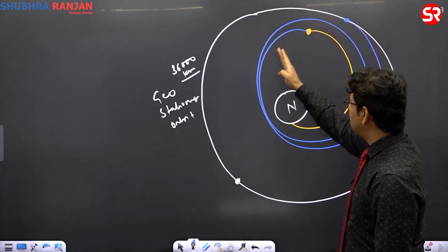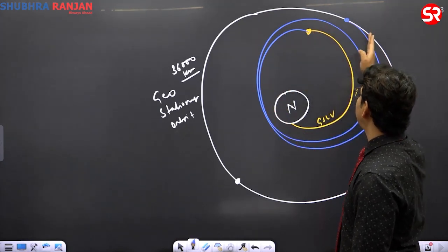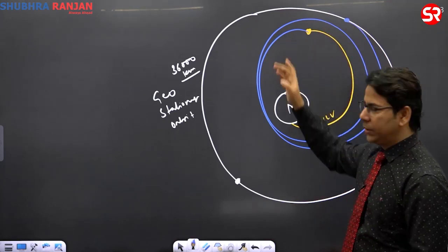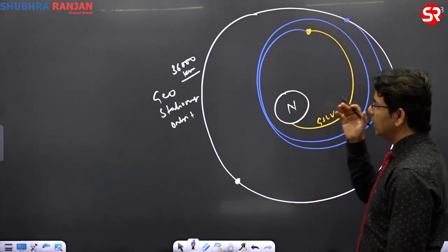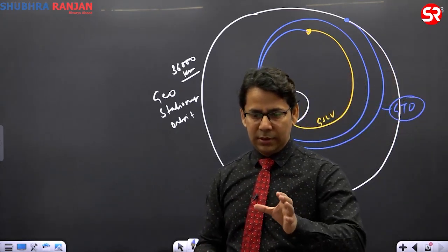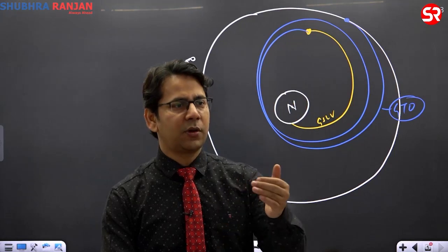From this point, this satellite will make two, three rounds around the Earth, and then finally it will enter into the designated orbit. So this is your GTO, geosynchronous transfer orbit. That means the satellite will transfer itself from this point to the geosynchronous orbit.